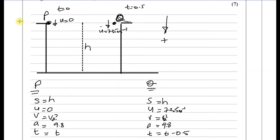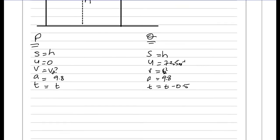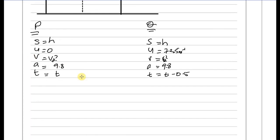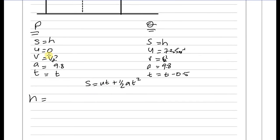Now let's use this to find the value of H. Since H is the same for both, we use S equals UT plus one half AT squared. For the first stone, U is zero, so H equals one half times 9.8 times T squared, which gives 4.9T squared.